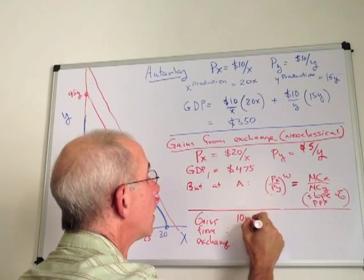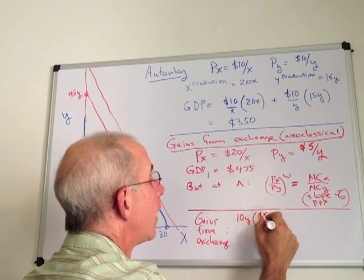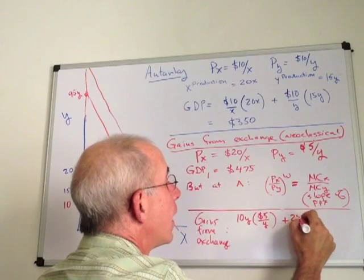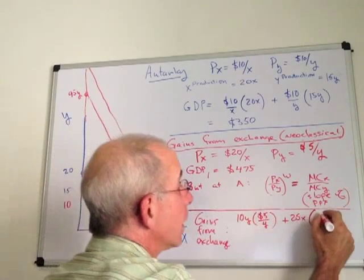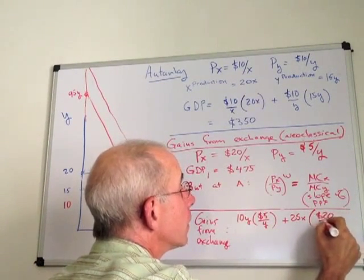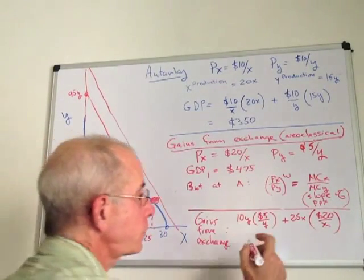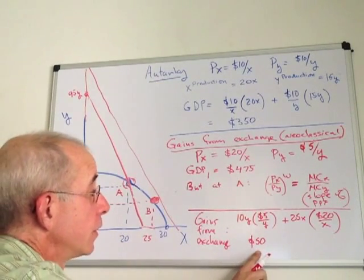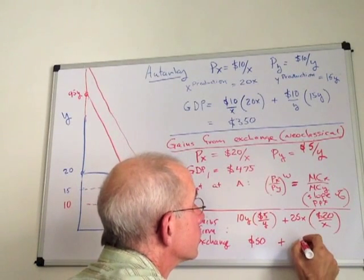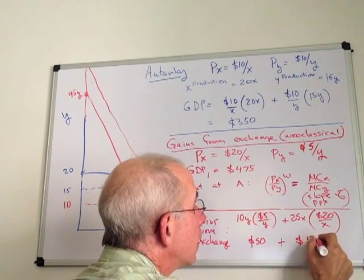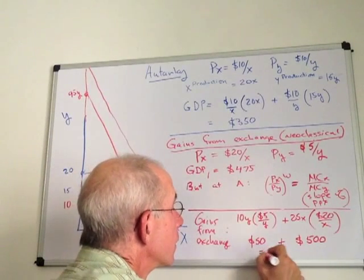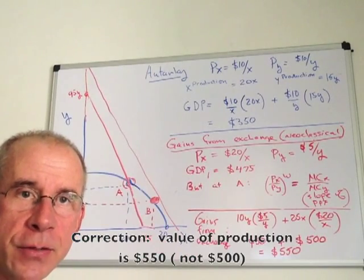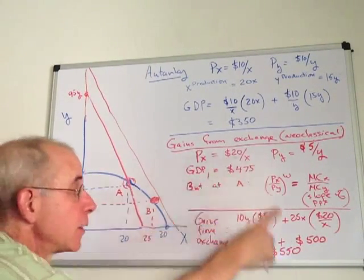So let's take a look at what that GNP is going to be now. We've got 10 units of Y, $5 per Y, that's the prices that we talked about before up here. We've got 25 units of X evaluated at $20 per X. So we've got the value of production of Y is $50. The value of production of X is $500, so that the overall GNP is now $550. By altering the production combination, we see we can go from a GDP of $475 to $550.